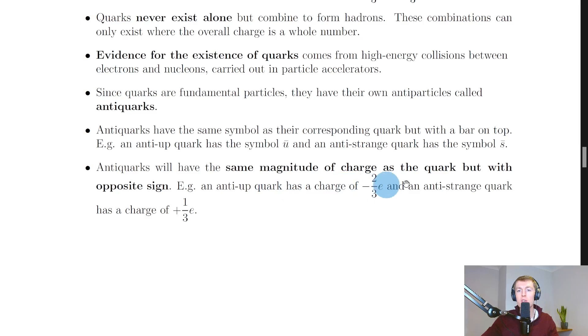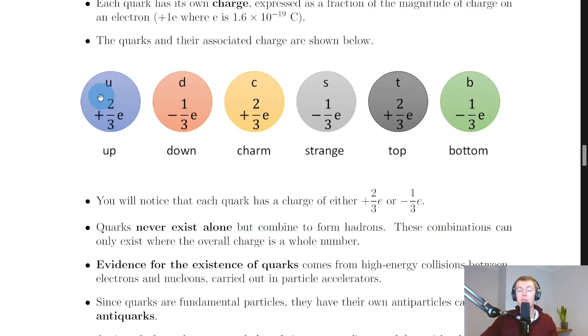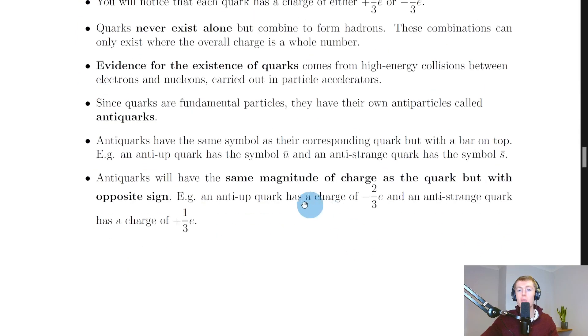antiquarks will have the same magnitude of charge as the quark but with opposite sign. For example, the up quark has a charge of plus two-thirds e, but that means the anti-up quark must have the same charge with opposite sign, so it would have a charge of minus two-thirds e.